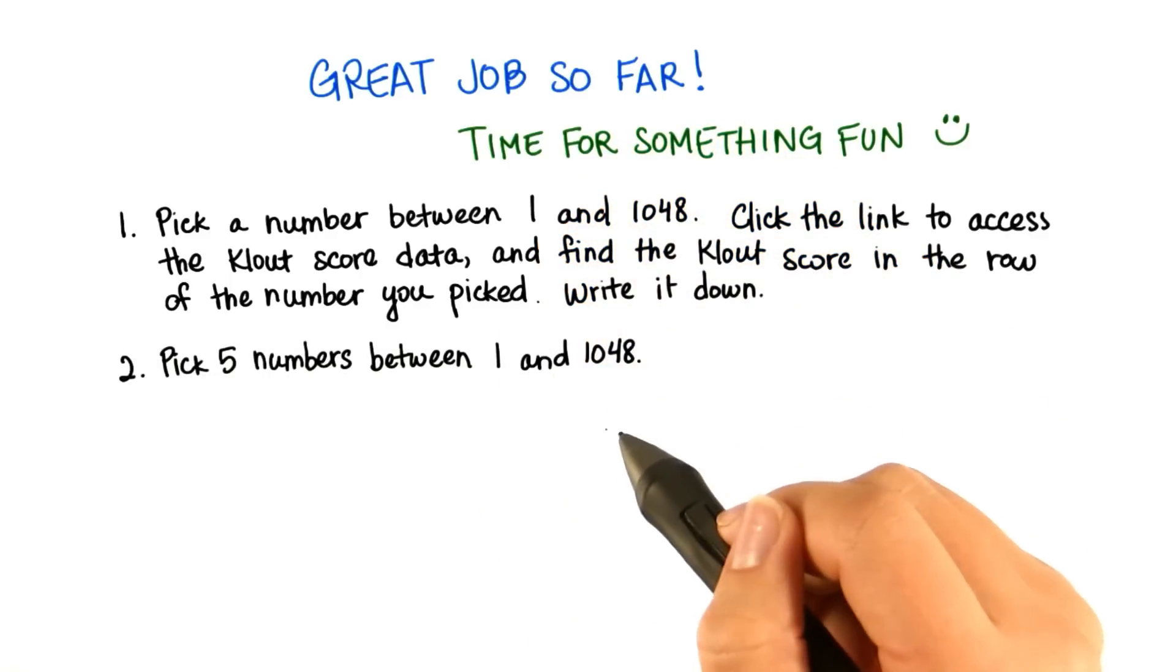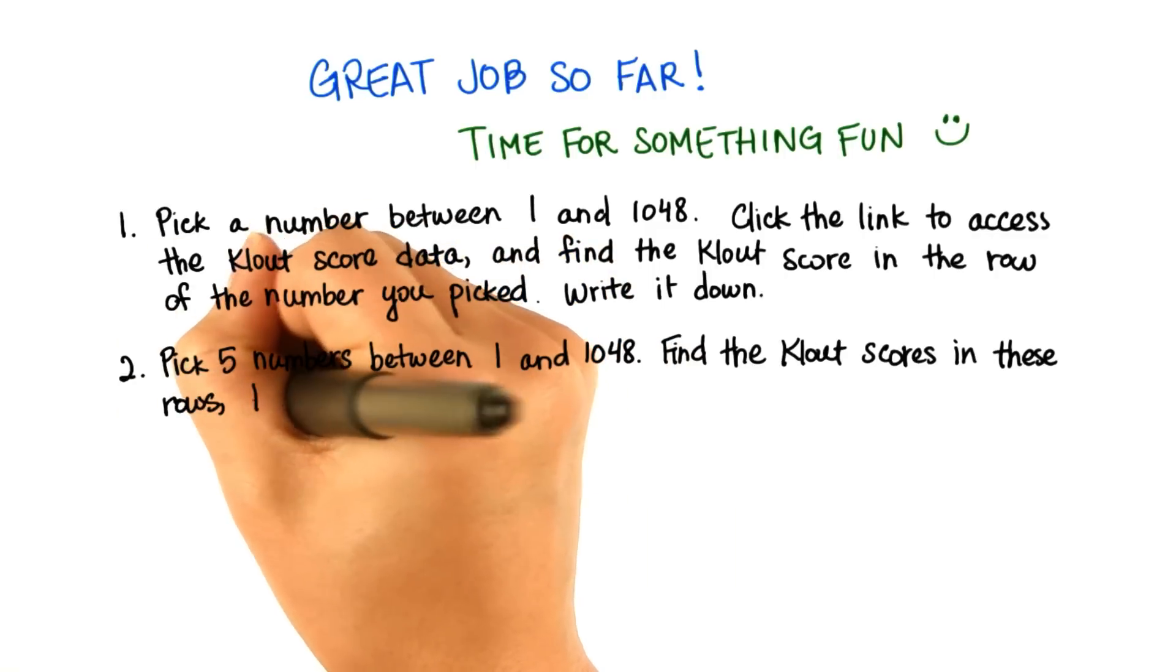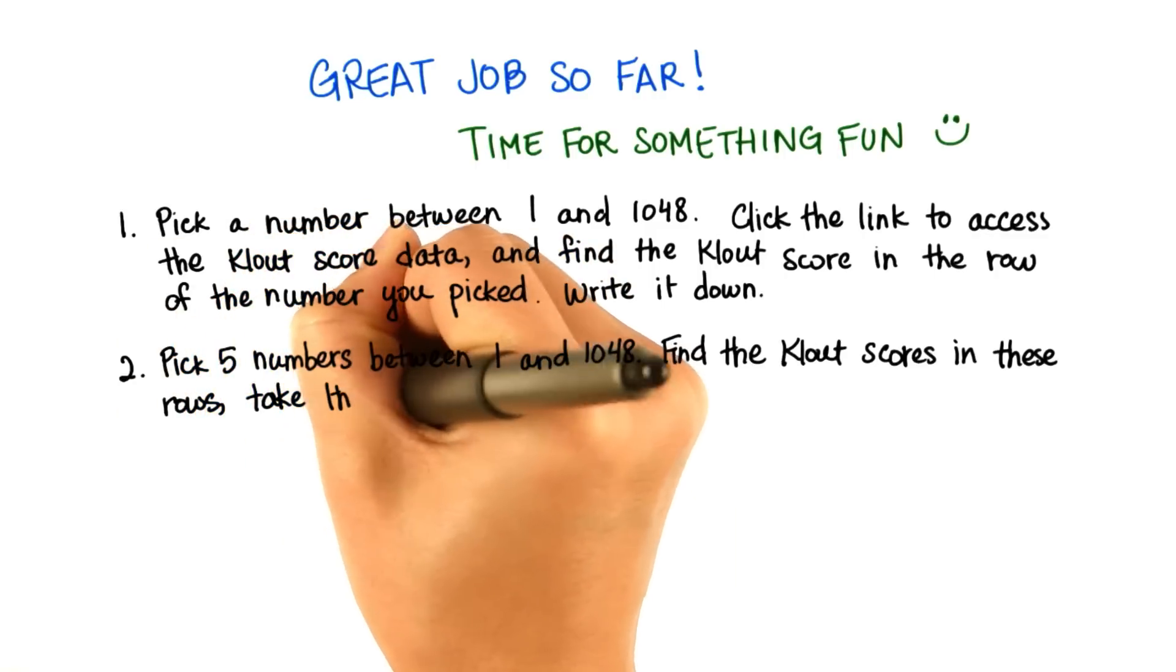Next, pick five numbers between 1 and 1048. Find the clout scores in these rows, take the average, and then write this number down.